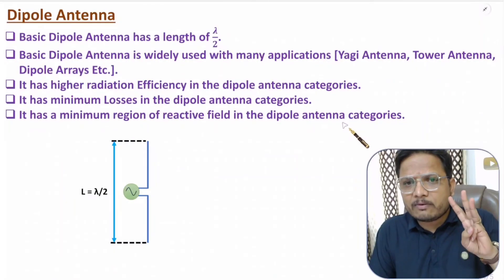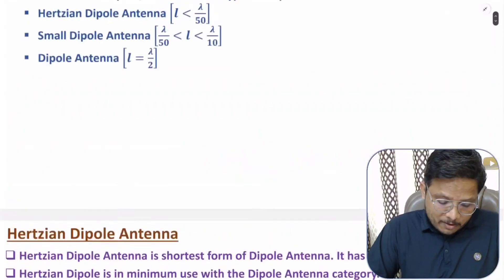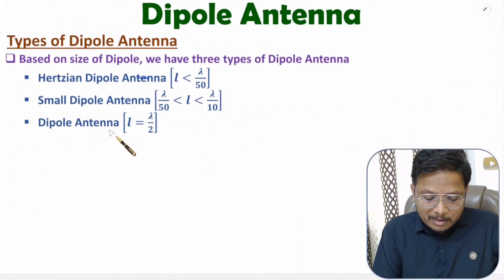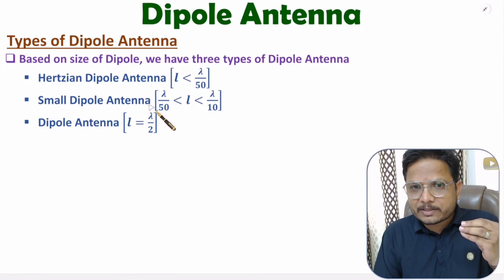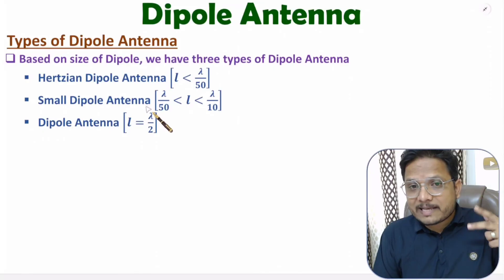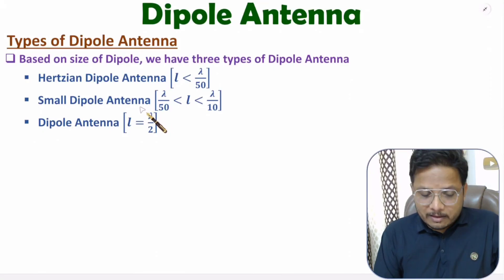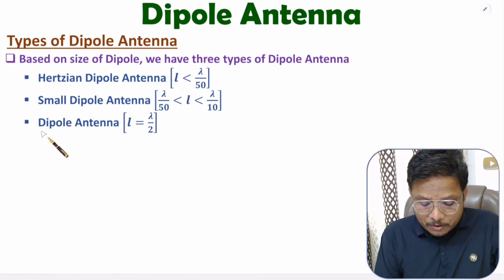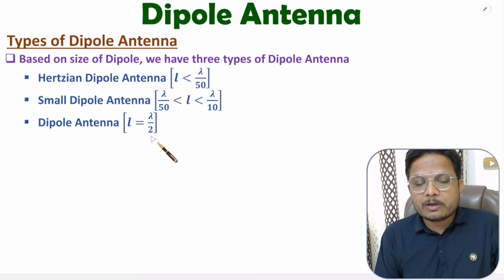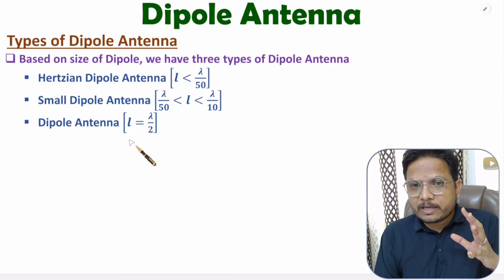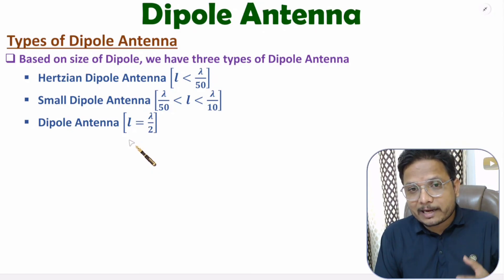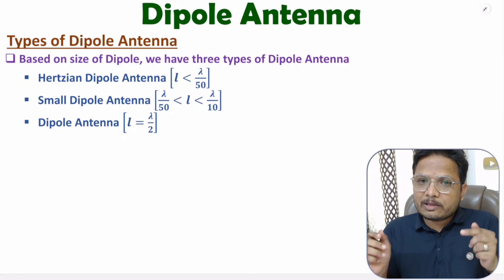Basically, we have three categories of dipole antennas: Hertzian dipole, small dipole, and basic dipole. The Hertzian dipole is the smallest form and has very rare applications. The small dipole has few applications — mainly lower frequency applications and tuner circuits. The majority of dipole antennas use the basic dipole with size lambda by 2, because it has the highest radiation efficiency with a radiation resistance of 73 ohms. I hope you understood this — if anything is unclear, note it down in the comment section. Thank you so much for watching.